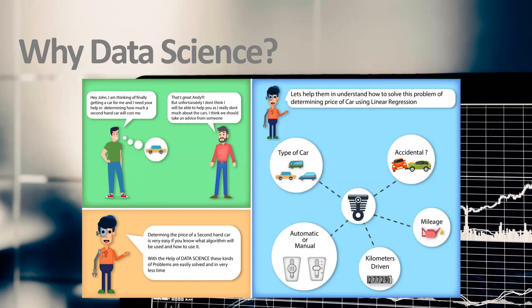I can decide the price based on the type of car — whether it is a hatchback, sedan, or SUV. I can also decide based on whether the car has been in an accident, because that will drastically reduce the price. Mileage is very important, especially when oil prices are high. How many kilometers have been driven matters too, since a heavily used car may not be in good condition. Finally, whether the car is automatic or manual also plays a role.